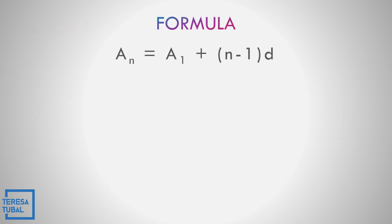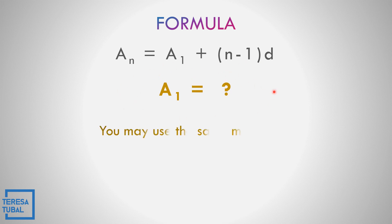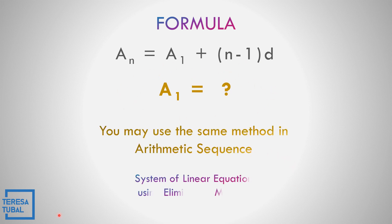The formula for the arithmetic sequence is a sub n equals a sub 1 plus the quantity n minus 1 times d. If the first term is unknown, you may use the same method and apply the system of linear equations using the elimination method.